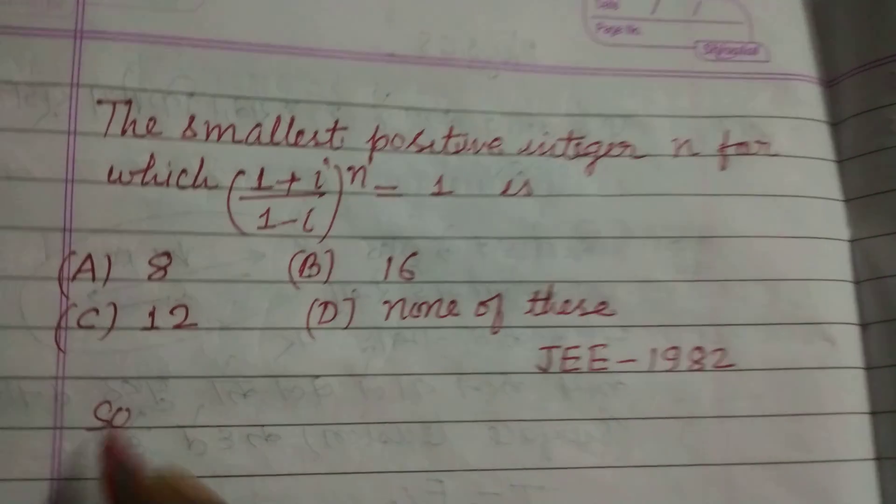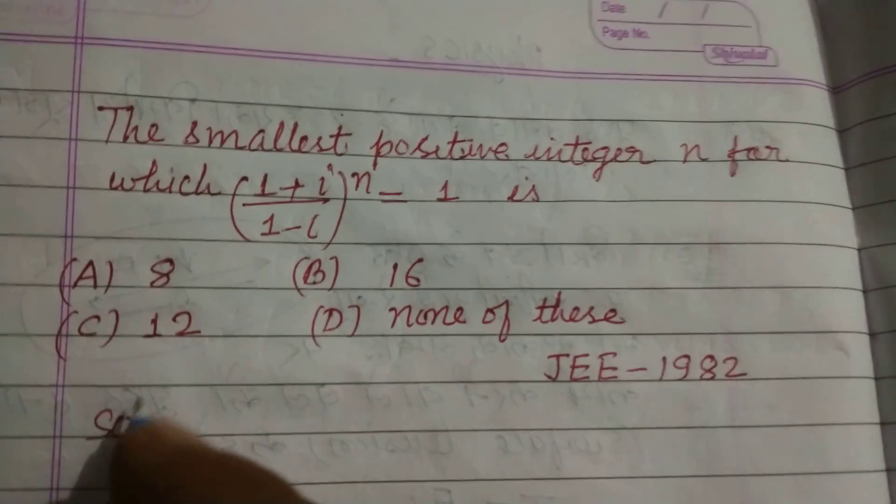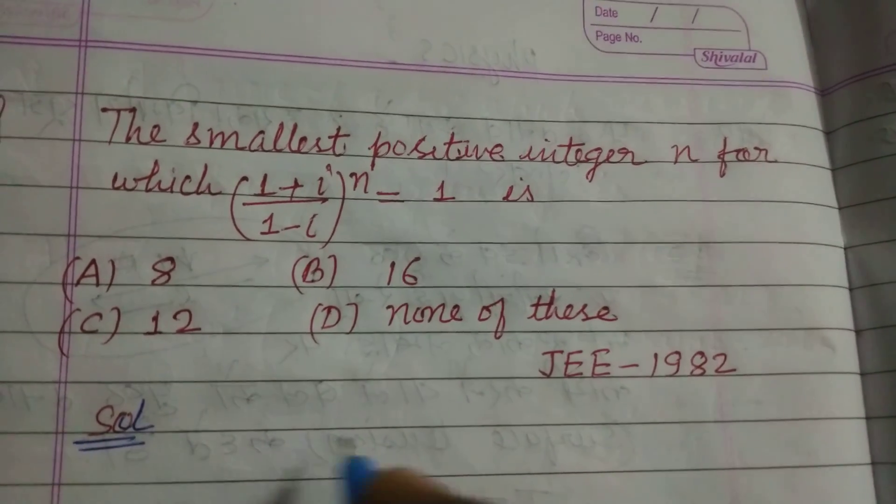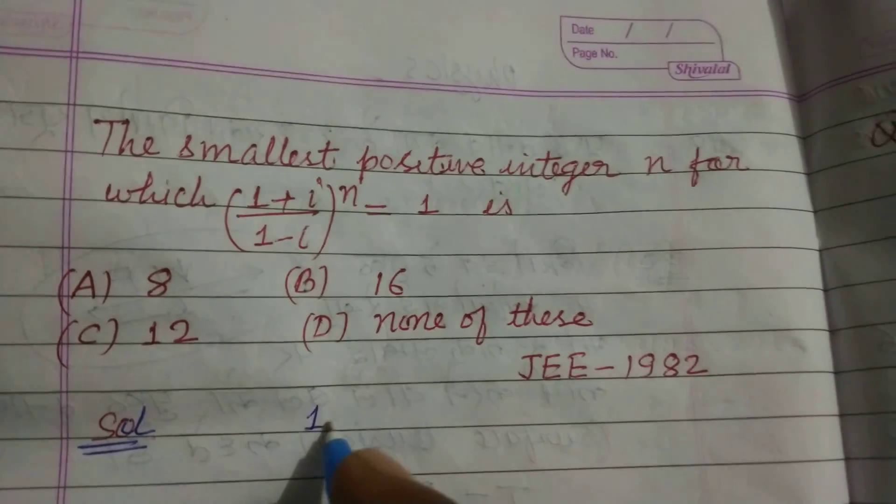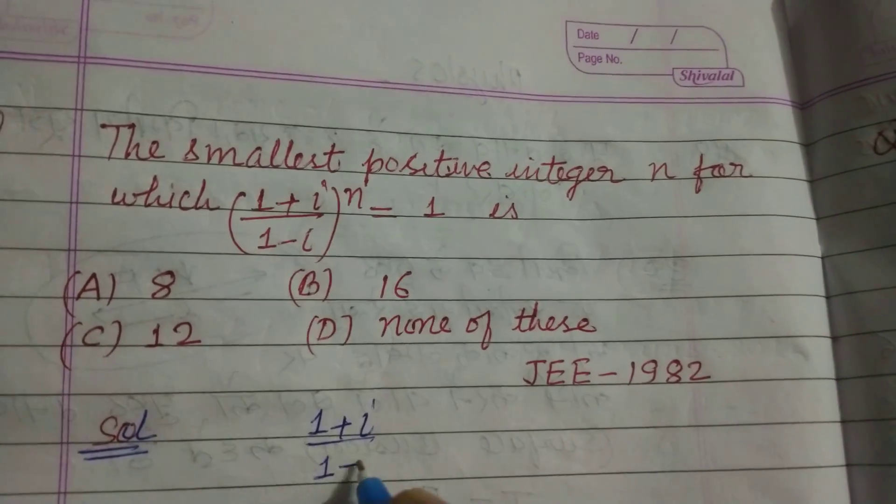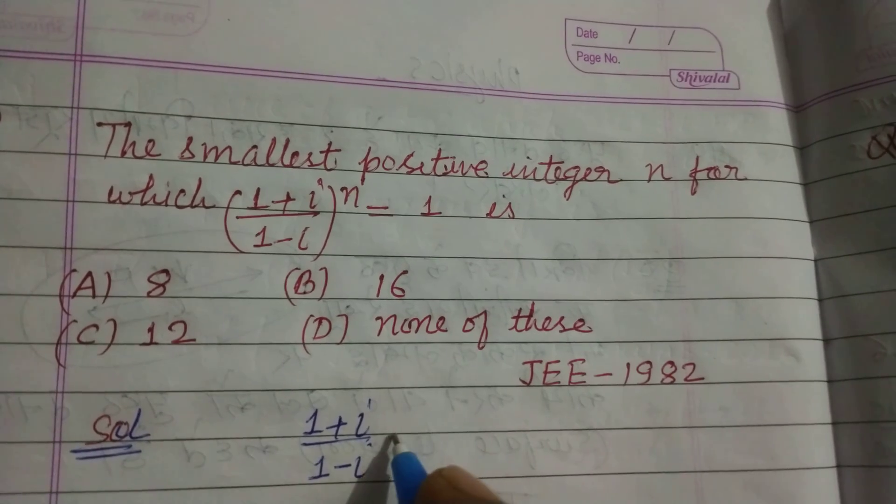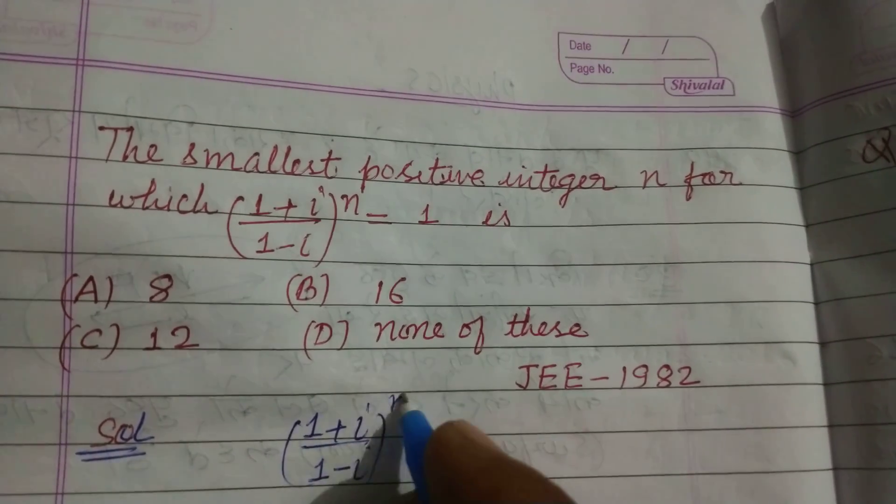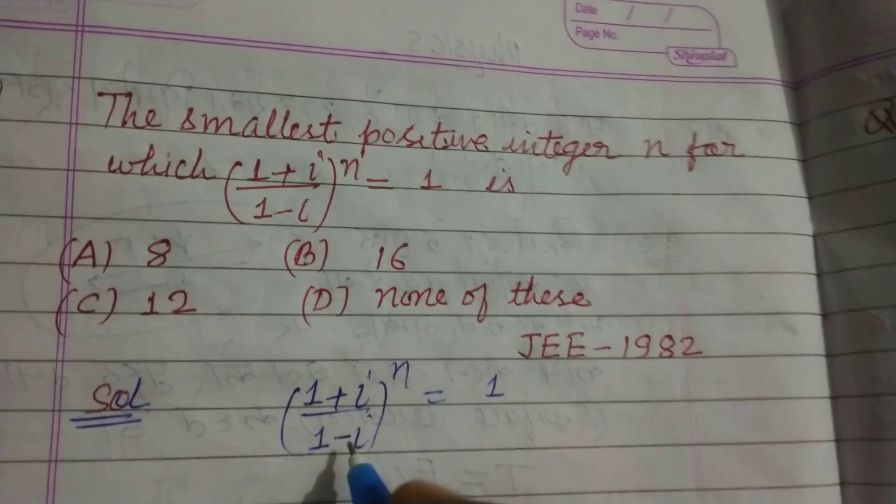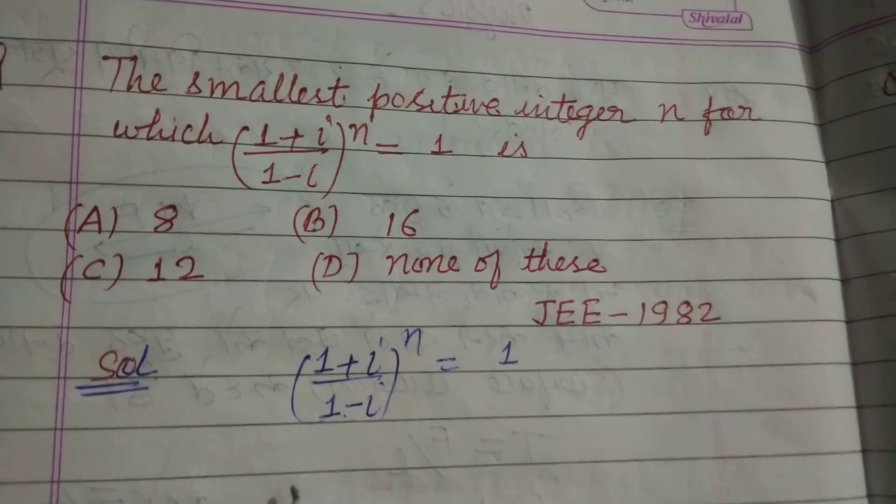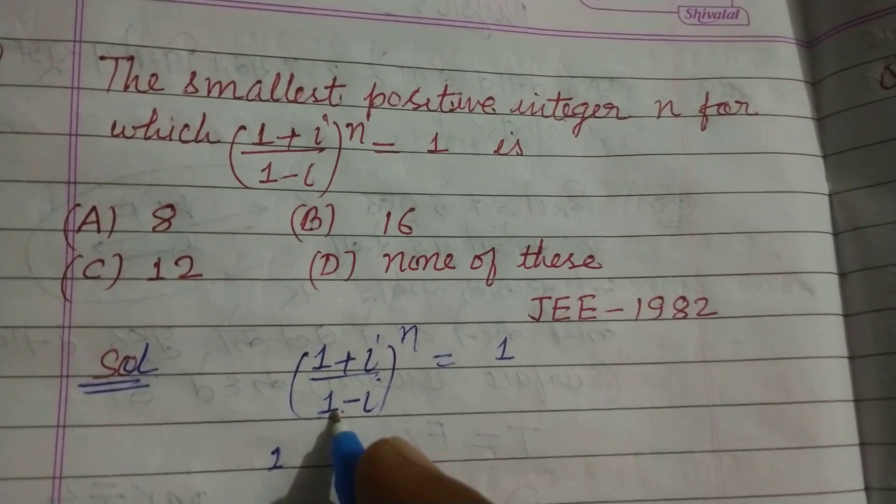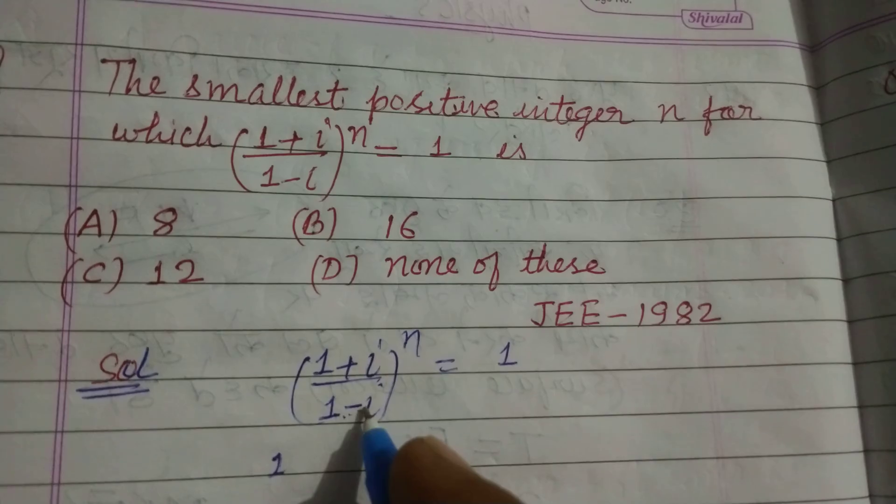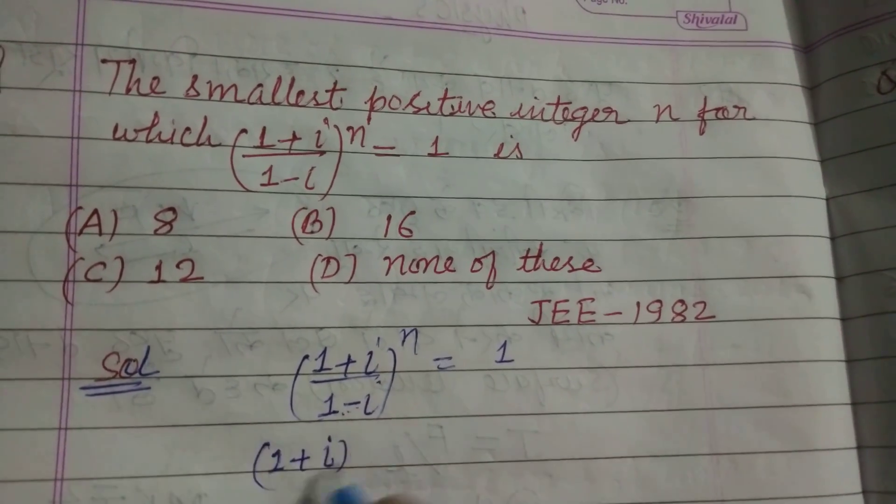So student, here we take (1+iota)/(1-iota) to the power n equal to 1. Now we simplify this by multiplying the conjugate of 1-iota in numerator and denominator.